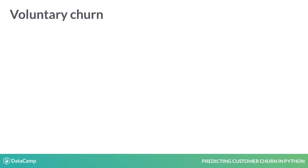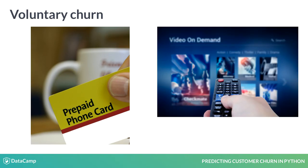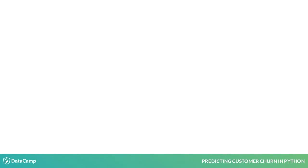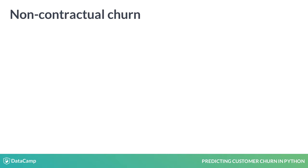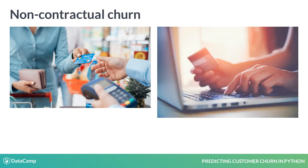Voluntary churn is when a user voluntarily cancels a service and includes prepaid cell phones and streaming subscriptions. Non-contractual churn is when a customer is not under contract for a service, and includes consumer loyalty at a retail location or online browsing.